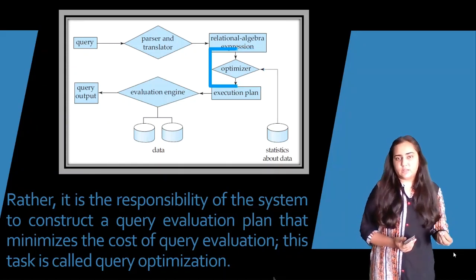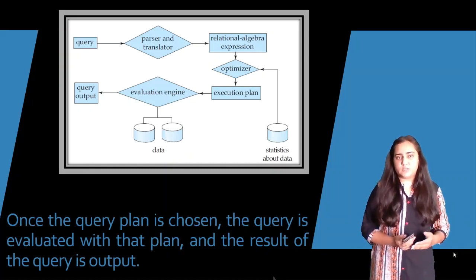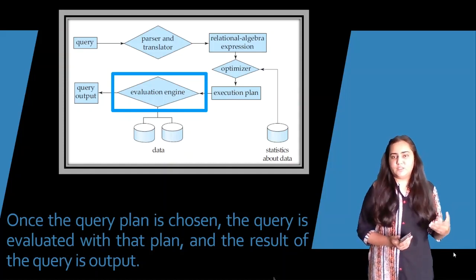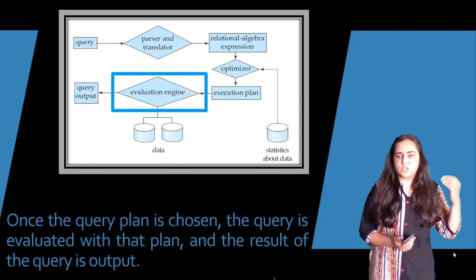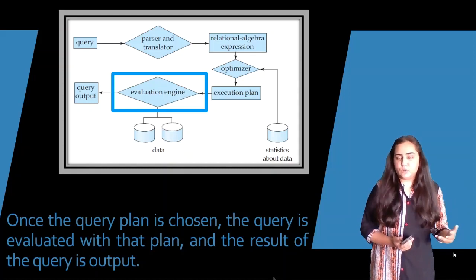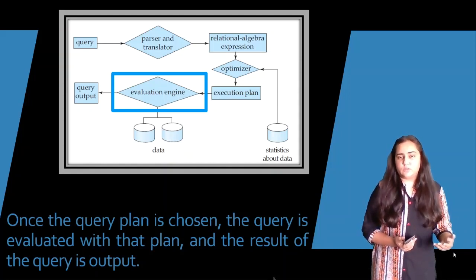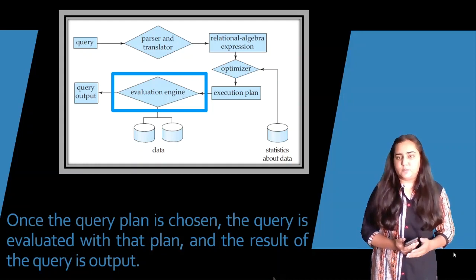Once a plan is picked, we come to the final stage: the evaluation stage. Since the query plan is already selected by the optimization phase, this stage is only about implementing that plan. All instructions are given — which operation should happen first, which second — so everything is ready. The only thing that needs to be done is to actually implement the query, generate the result, and give it to the user.